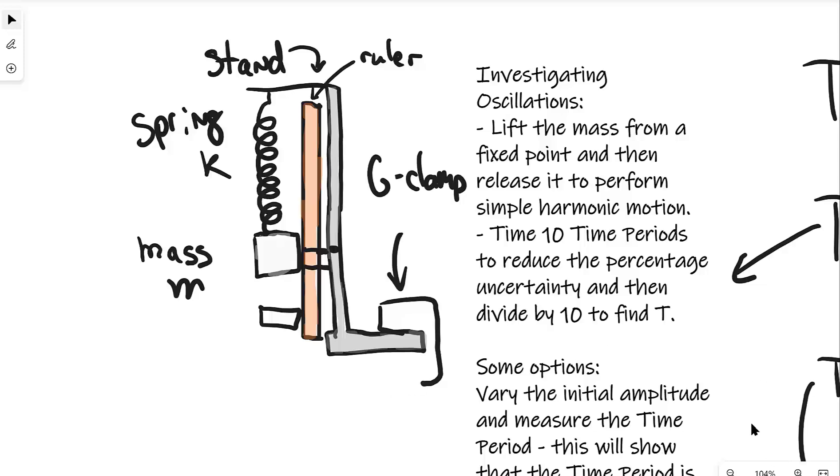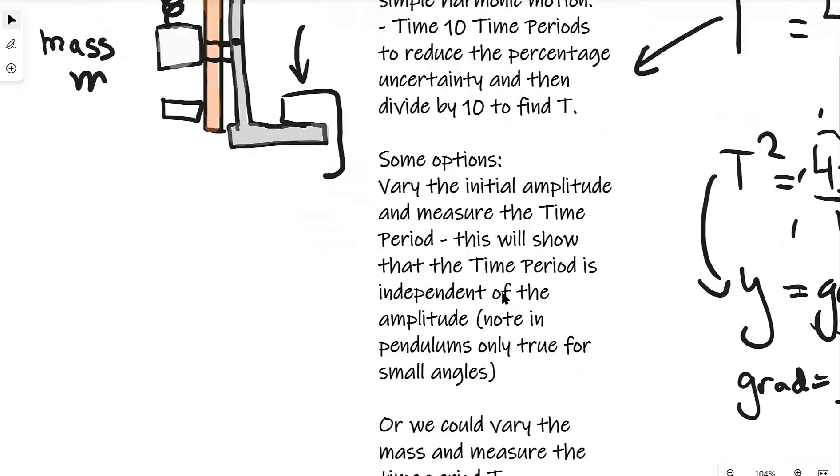Now there are a few things that we could investigate. For instance we could vary the initial amplitude and measure the time period. This will show us that the time period in simple harmonic motion is independent of the amplitude. Here's something really important: if the question is about amplitude and time period, in pendulums this is only true for small angles. How do I define a small angle? Let's say less than 10 degrees. If that's the case it's pretty safe that it will be showing simple harmonic motion.